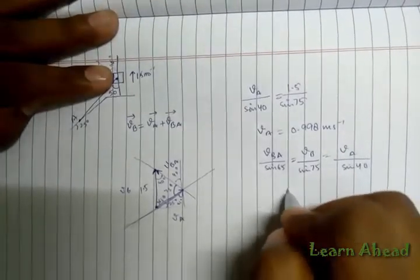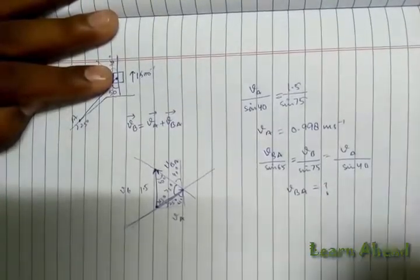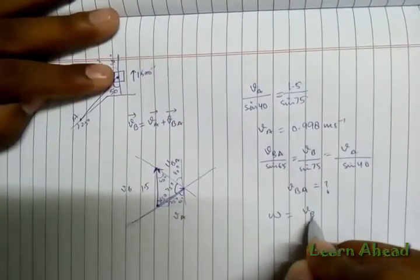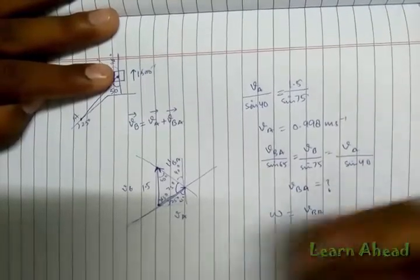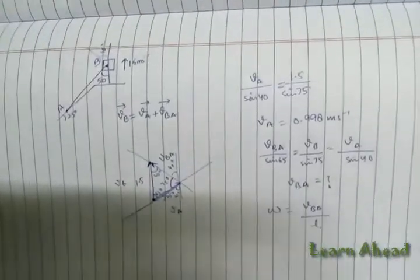So you can calculate VBA from here. Once you calculate VBA, you know that omega equals VBA over the length of the link, which is given in the problem, and you will be able to calculate the angular velocity also. Thank you.